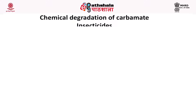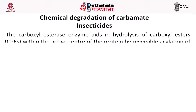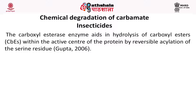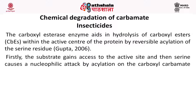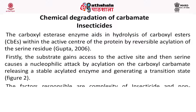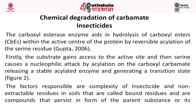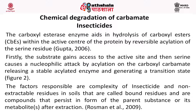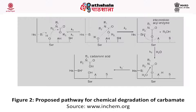As an example: chemical degradation of carbamate insecticide. The carboxylesterase enzyme aids in the hydrolysis of carboxylester bonds within the active centers of the protein by reversible acylation of the serine residue. Firstly, the substrate gains access to the active site, and then serine causes a nucleophilic attack by acylation on the carboxyl carbamate, releasing a stable acylated enzyme and generating a transition state. The factors responsible include the complexity of insecticides and non-extractable residues in soil, called bound residues — compounds that persist in soil as parent substance or their metabolites after extraction. The pathway of chemical degradation of carbamate has been shown in a figure.